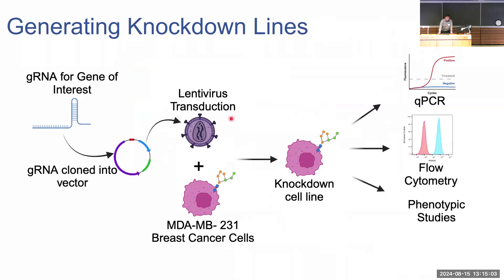Once we got our chosen genes of interest, we generated the guide RNAs. I cloned them into a lentiviral vector before packaging them up with the help of the Wisnowski lab into lentiviral particles and transducing them into MDA231 breast cancer cells. With our resulting knockdown cell lines, we performed qPCR, flow cytometry, and a few phenotypic studies on these lines.